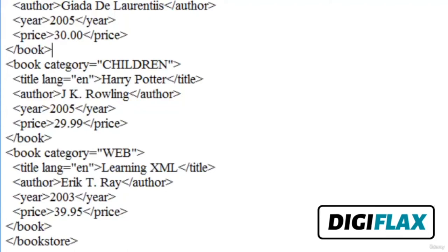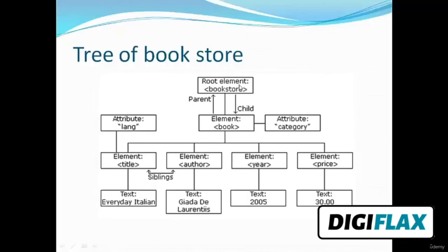Let's look at the tree of this document. The root element is 'bookstore'. 'Book' is a child element with attribute 'category'. The 'book' element contains four sub-elements: 'title', 'author', 'year', and 'price'. The 'title' element contains an attribute 'language'. Title and author are siblings of each other. The data or text is written inside these elements. This is the tree structure of an XML document.